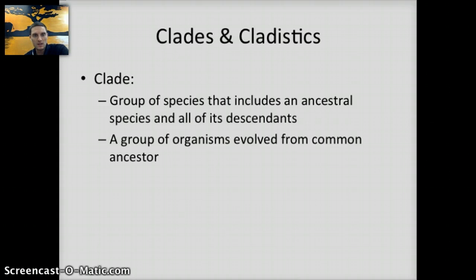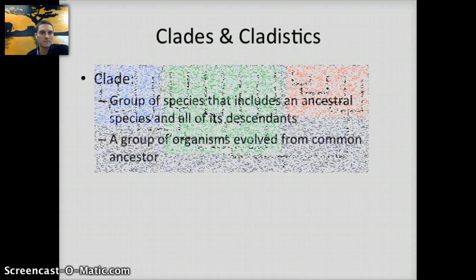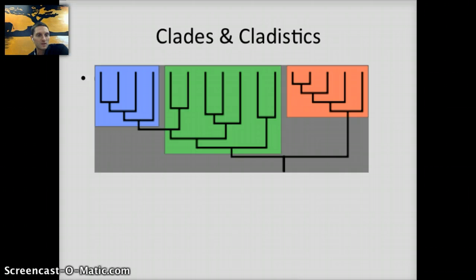This indicates that there's a group of organisms evolved from a common ancestor. Here's a diagram to help us visualize that. The red and blue sections represent clades — they're completed branches. The green is not a clade since it does not include the species of the blue box that were descended from the same ancestors as the green species.